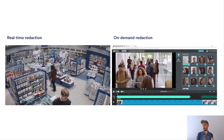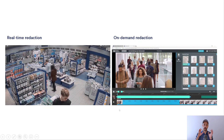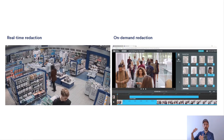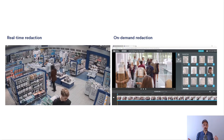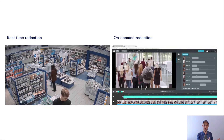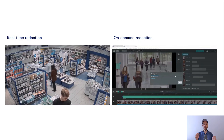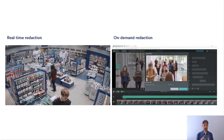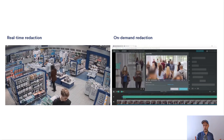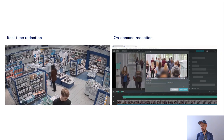And then there's the second type, which is on-demand redaction. This is the process of doing redaction while you're exporting a video. Typically this could be when you found evidence that you want to share with the public or somebody else, where you need to make sure that the privacy of uninvolved individuals is protected.